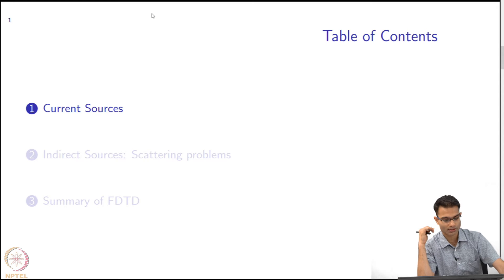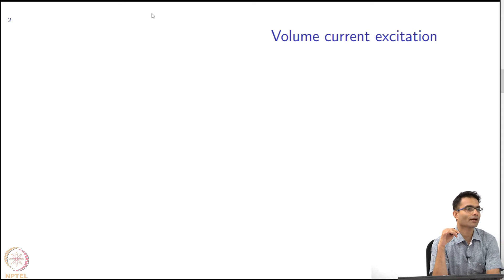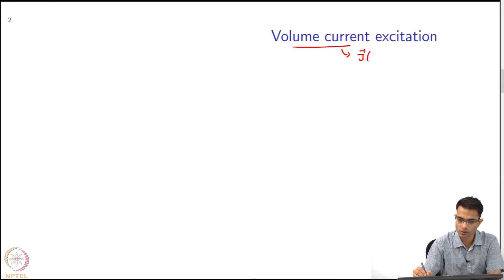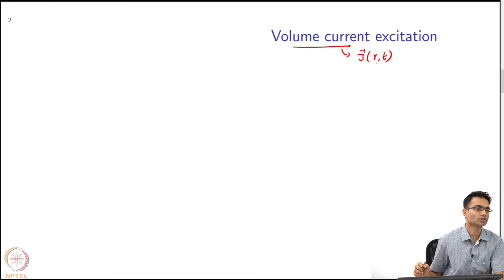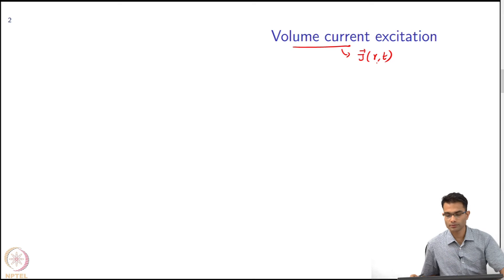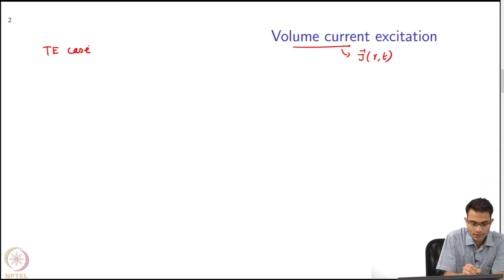We will deal with current sources first — this is the easy part, coming straight out of Maxwell's equations. A volume current excitation is simply given by the term J at some point in space and time. For example, take the 2D TE case.